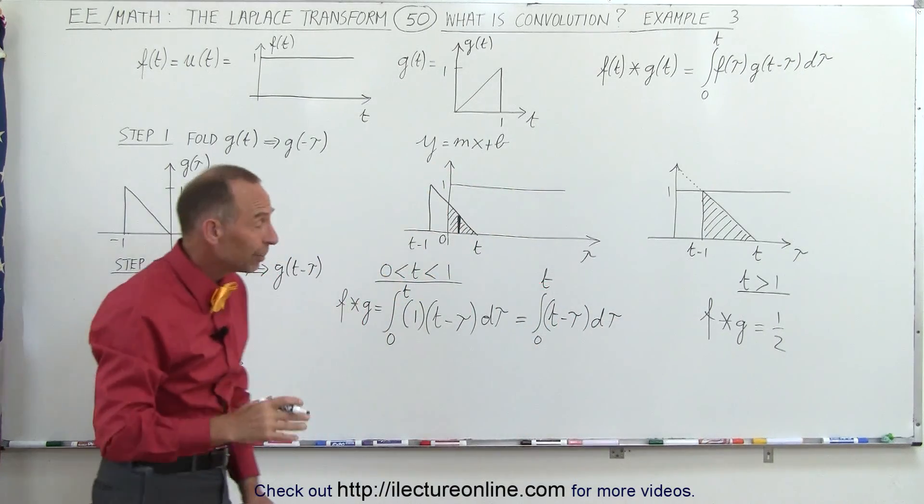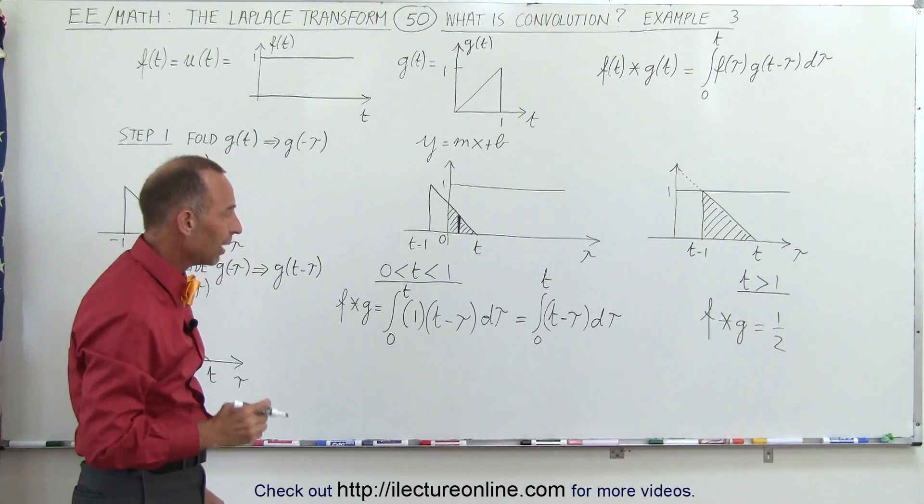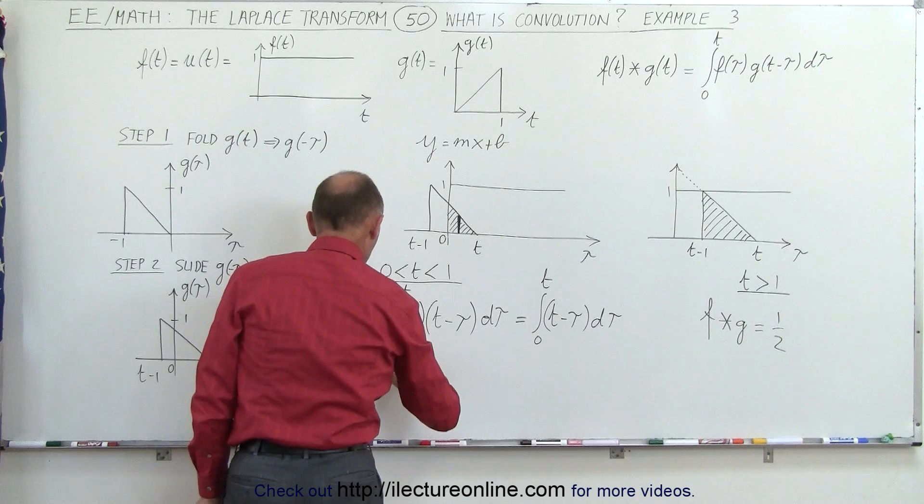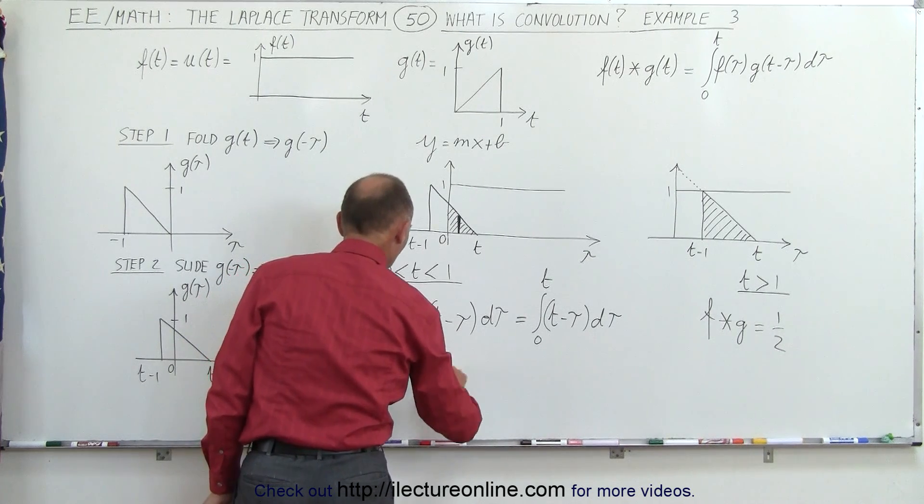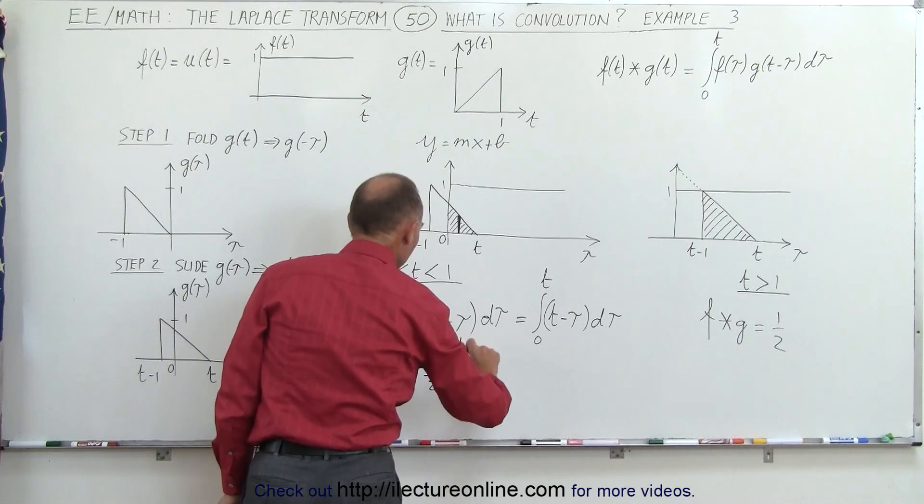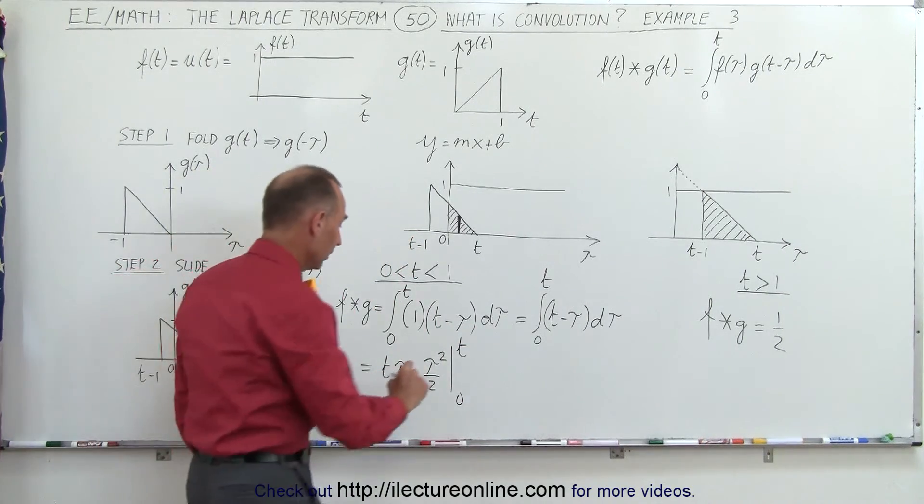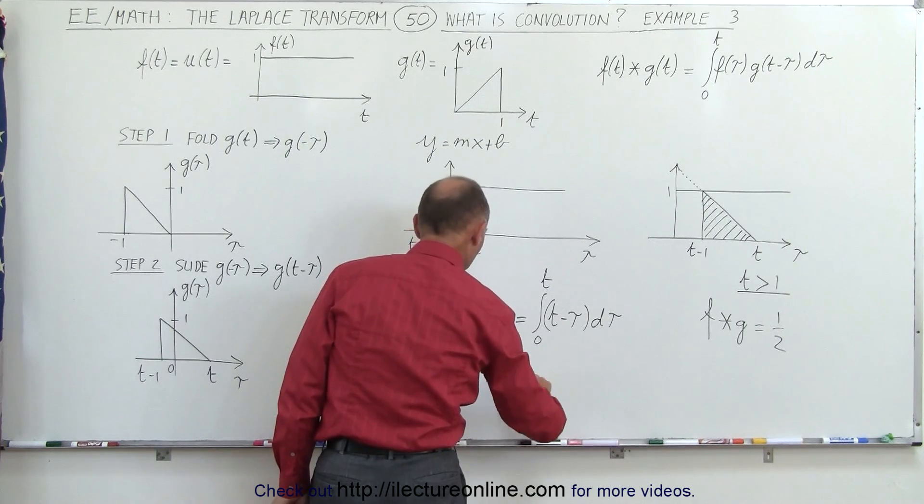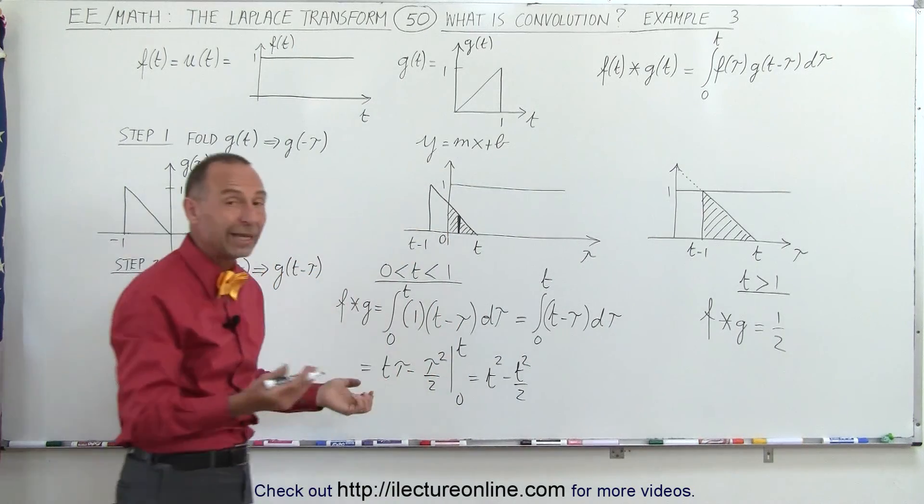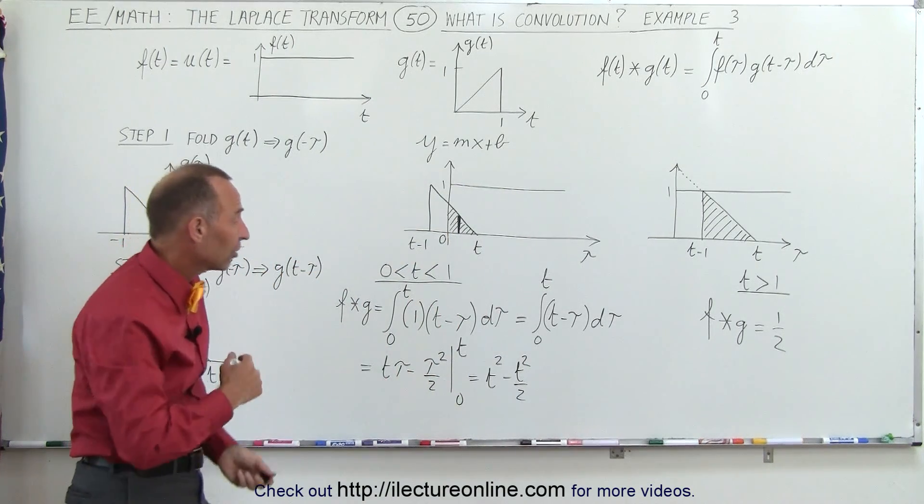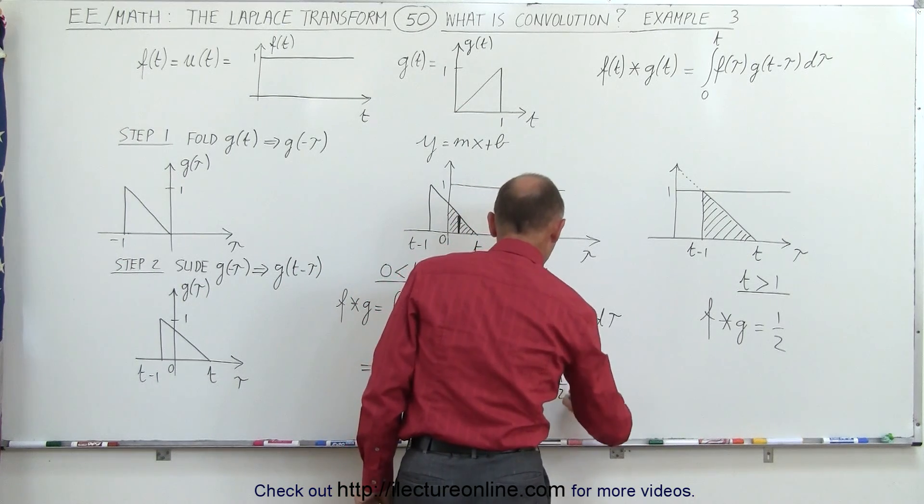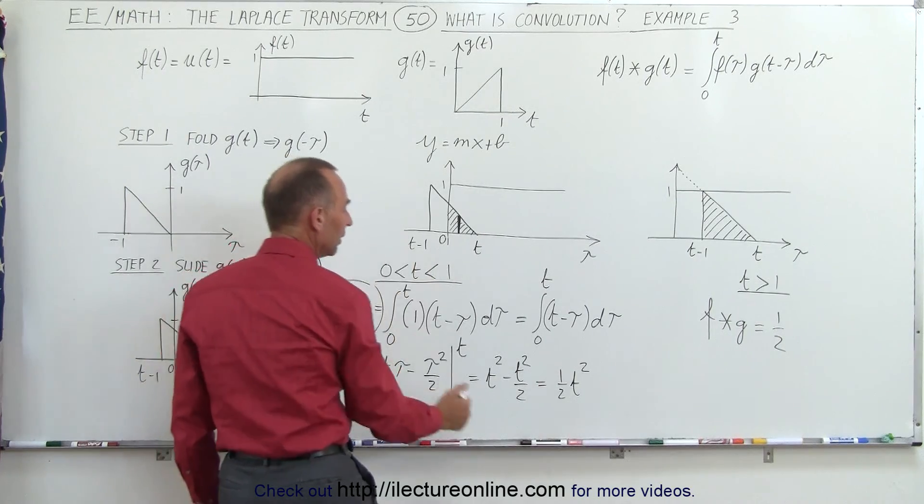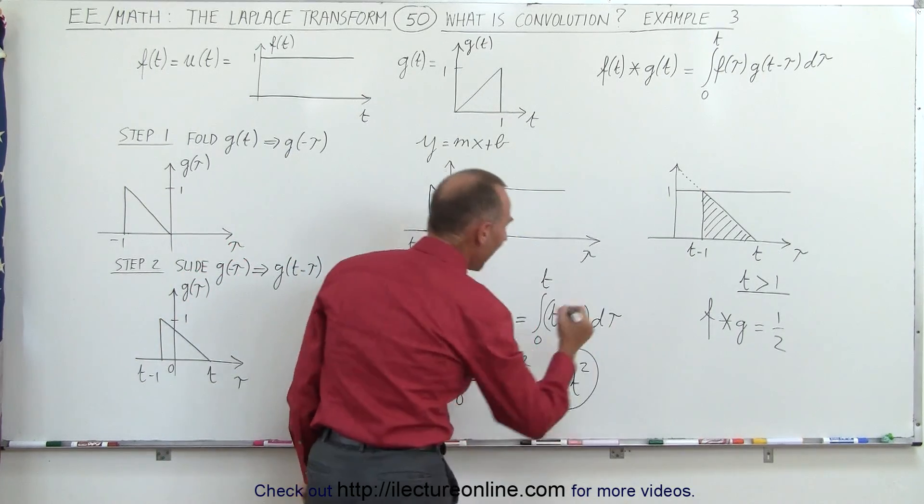Remember that in this case, the t is simply a constant, it's not a variable, the variable is the dummy variable tau. So now when we integrate that, we get the following, this is equal to t times tau minus tau squared over 2, evaluated from 0 to t. We plug in the upper limit, we get t times t, which is t squared, minus t squared over 2. And of course, when I plug in the lower limit, we get 0, so we don't have to worry about that. t squared minus t squared over 2 is equal to 1 half t squared. So the convolution of f and g for the region from 0 to 1 is equal to 1 half t squared.